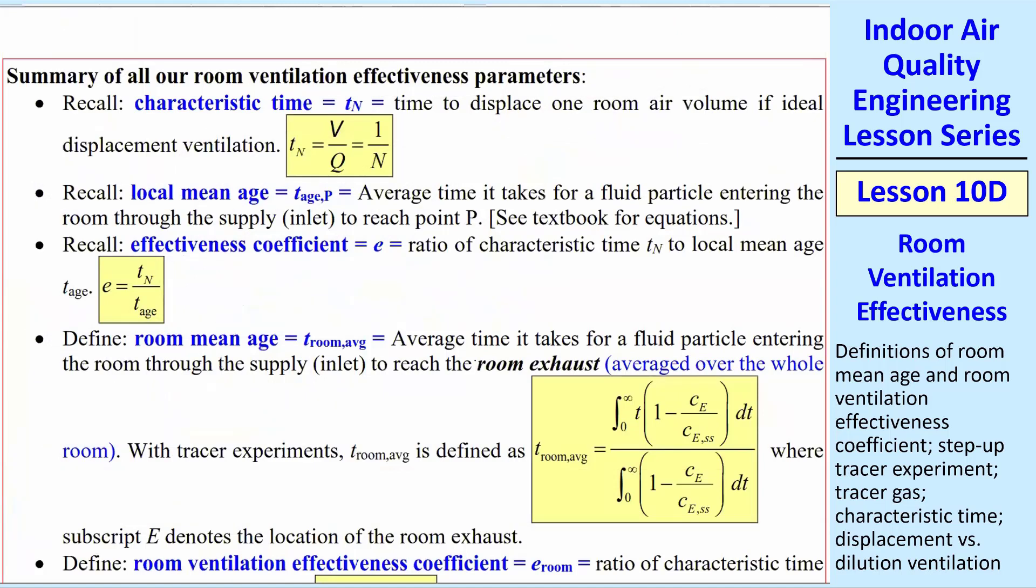Last time, we talked about a characteristic time, TN, which was simply 1 over capital N or V over Q, the time to displace one room volume if we had ideal displacement ventilation, and then we defined a local mean age, which was the same thing we're just doing except we have it at some point P instead of at E, and then we defined this effectiveness coefficient at a point, TN over TH.